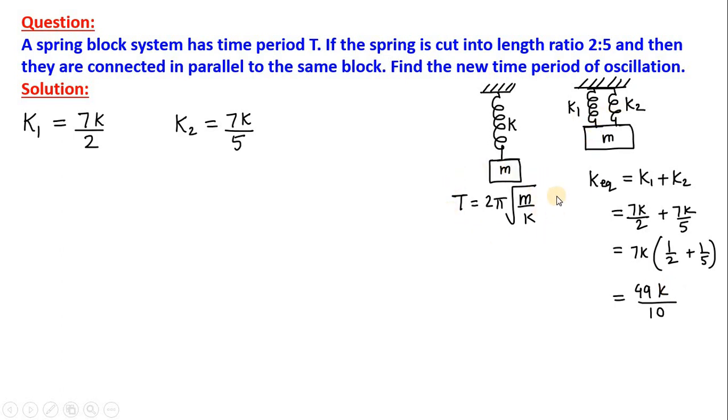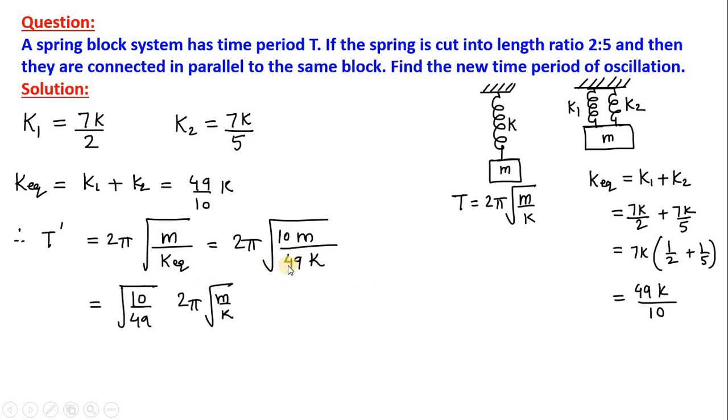Then, using this formula, the new time period for this combination should be T dash is equal to 2 pi root of m upon K equivalent. Here is the K equivalent, put the value here. K equivalent you substitute here we will get this reciprocal. So, 49K divided by 10m comes here. Now, from this square root we can take root 10 by root 49 outside and remaining will be 2 pi into root of m by K.